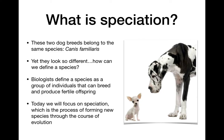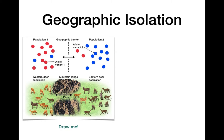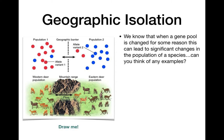Various factors can cause speciation — we're going to talk about four different examples today. The first one is geographic isolation. We've already talked about gene pools and populations changing over time, and we understand that when a gene pool changes, that can lead to significant changes in the species as a whole. Can you think of any examples of gene pools changing that you've looked at so far in this unit?